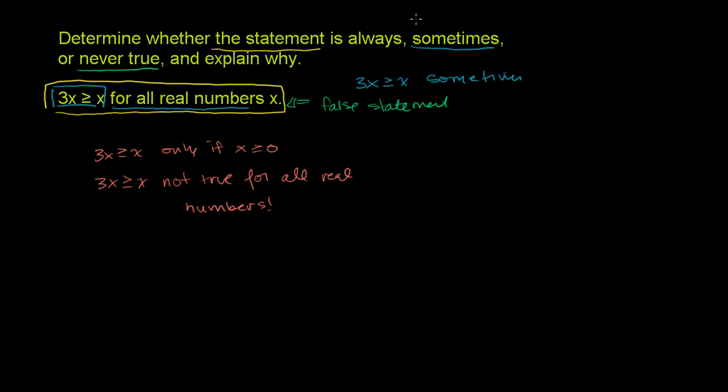The problem writer wanted us to circle sometimes because, as I already stated, I think they wanted us to think about the statement as 3x is greater than or equal to x. So my general opinion, 3x is greater than or equal to x sometimes for some real numbers, but not for all real numbers.